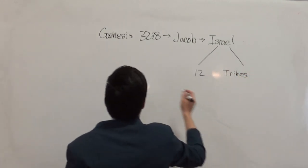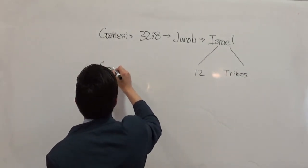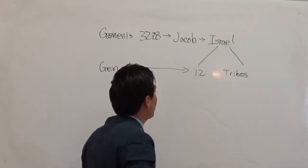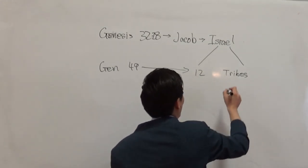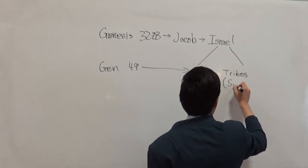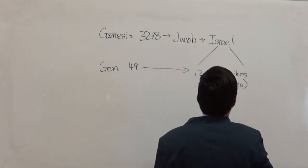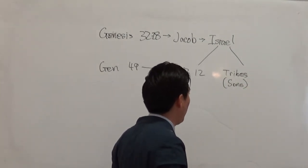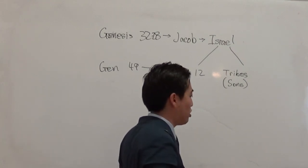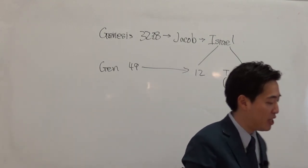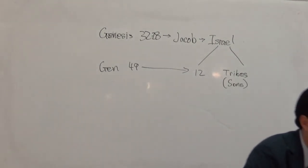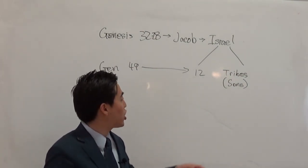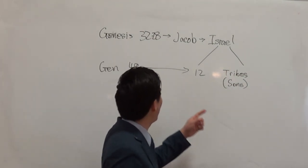Genesis chapter 49 lists the 12 tribes, each named after one of Jacob's sons. Judah comes from his son Judah, Naphtali from Naphtali, Benjamin from Benjamin, Joseph from Joseph, and so on.